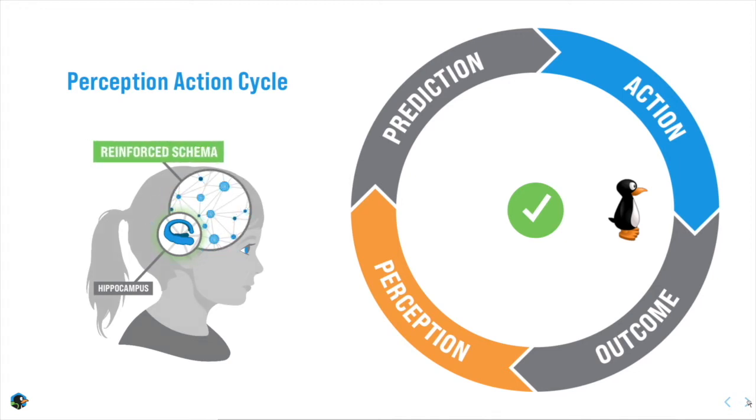Literally, chemicals flood from the hippocampus to that neural network and make it bigger and stronger. So the next time I see a similar problem, it's more likely that this schema will make my prediction.